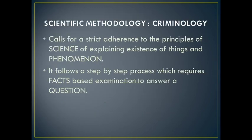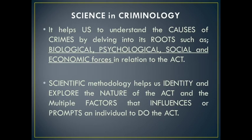What is scientific methodology in criminology? Scientific methodology calls for a strict adherence to the principles of science in explaining the existence of things and phenomena. It follows a step-by-step process which requires facts based on examination to answer a certain question. In criminology, science helps us understand the causes of crimes by examining its roots, such as biological, psychological, social, and economic forces in relation to the act.